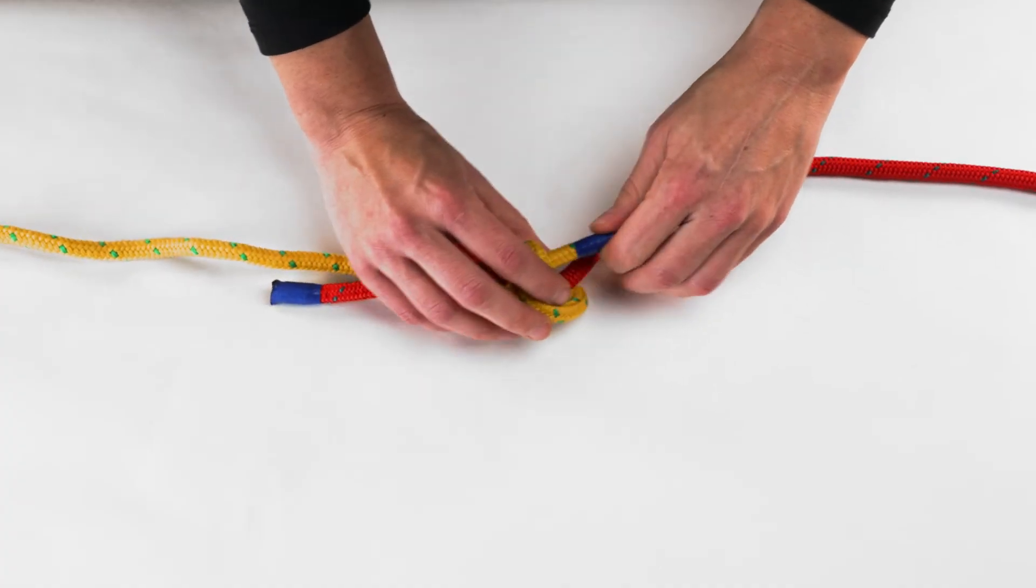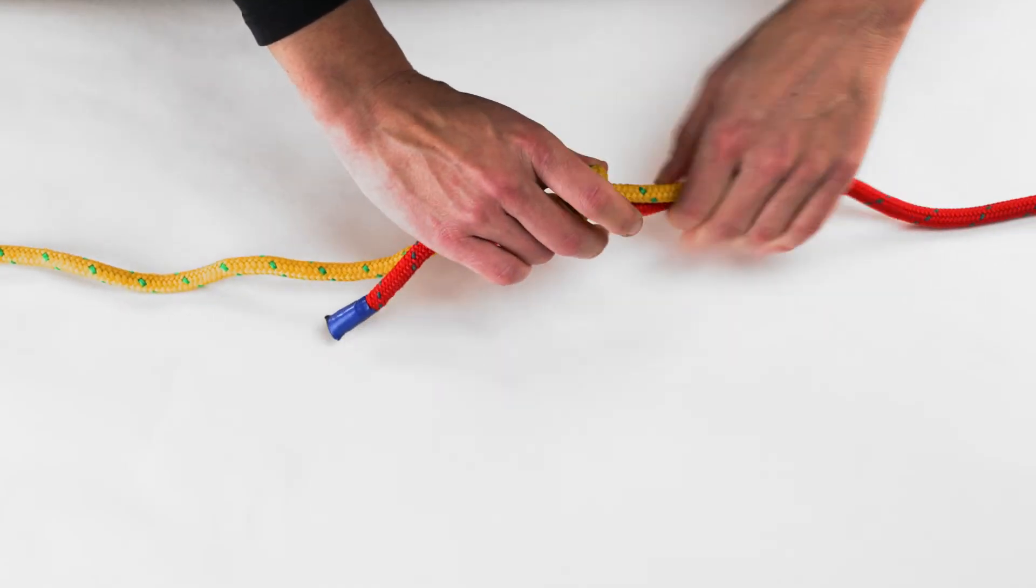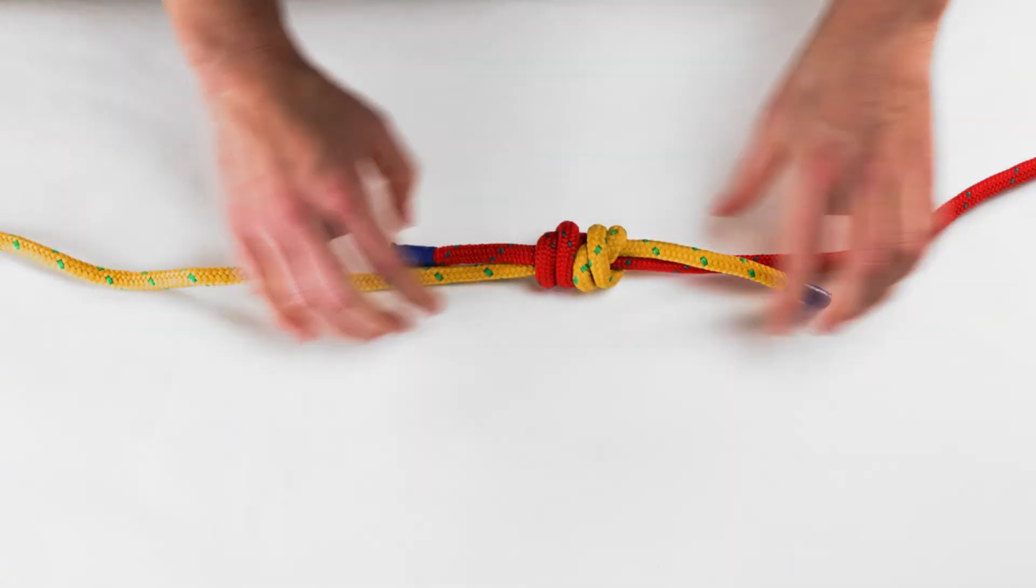At this stage, ensure that two crosses have been formed by the two knots and that they are on the same side.